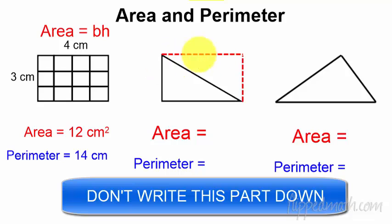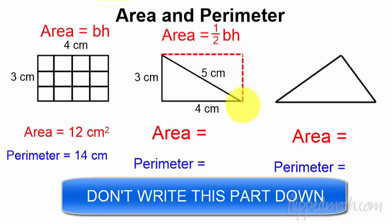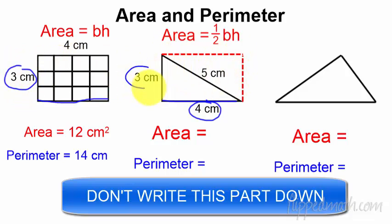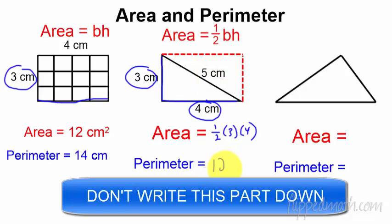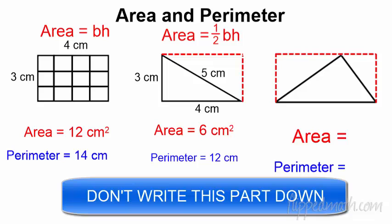Check it out — a triangle is actually what? It's a rectangle cut in half. See how it's half of a rectangle? So for a triangle we use one half base times height. The base is the same base as the rectangle — four. And the height is the same height — three. So it's one half times three times four. For perimeter we still add three plus four plus five, which equals 12.